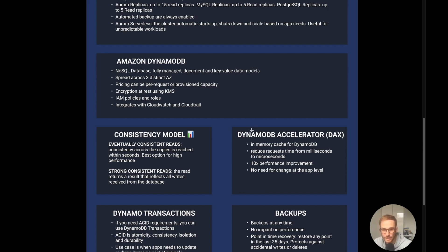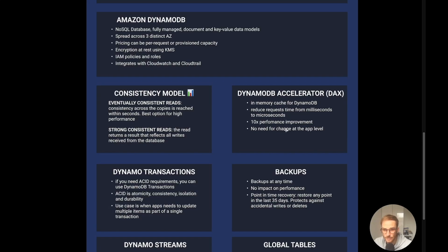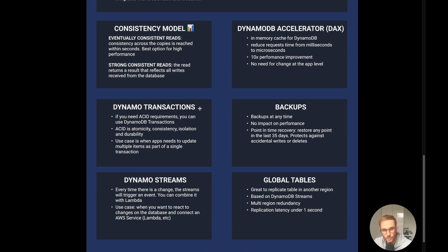DynamoDB has very high performance — you can typically get data within milliseconds. But if your application needs further performance improvement, you can add an in-memory cache for DynamoDB called DynamoDB Accelerator or DAX. It reduces request time from milliseconds to microseconds — a 10x performance improvement. You pay for DAX by the hour, and there is no need to change anything at the application level — you just activate it from the AWS console.